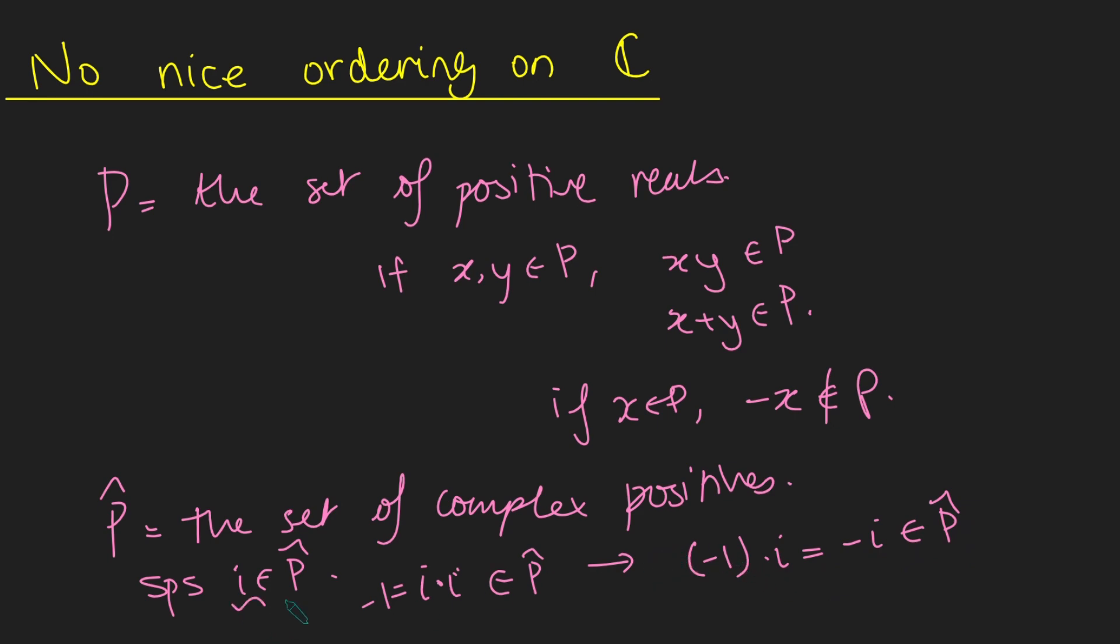But then we get the issue that i is in P hat, but also minus i is in P hat. And that contradicts this property here. This is a really quick proof as to why we can't have a set of positive complex numbers that satisfy all three of these properties. I don't even really need to use this guy here at all. And you can do something very similar if you assume that i is not in P hat. You basically then know that minus i would have to be in P hat, and you just repeat a very similar argument here.